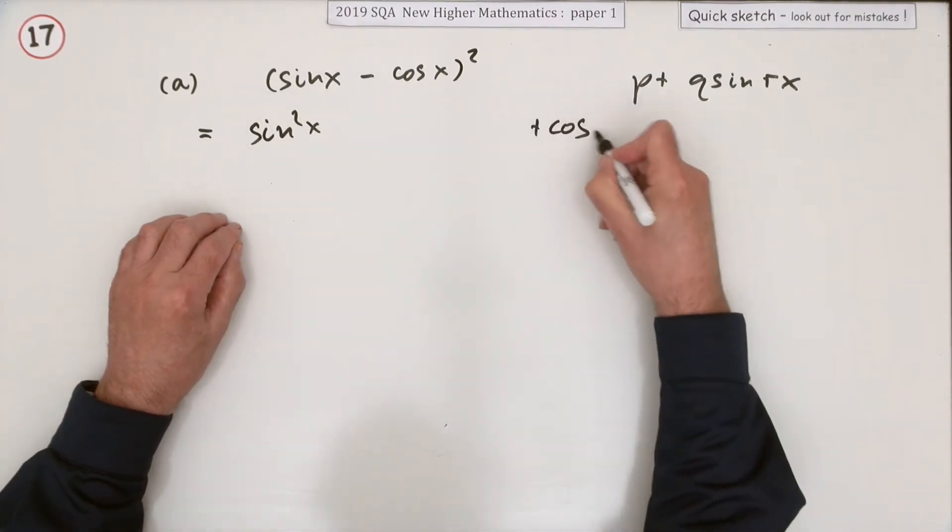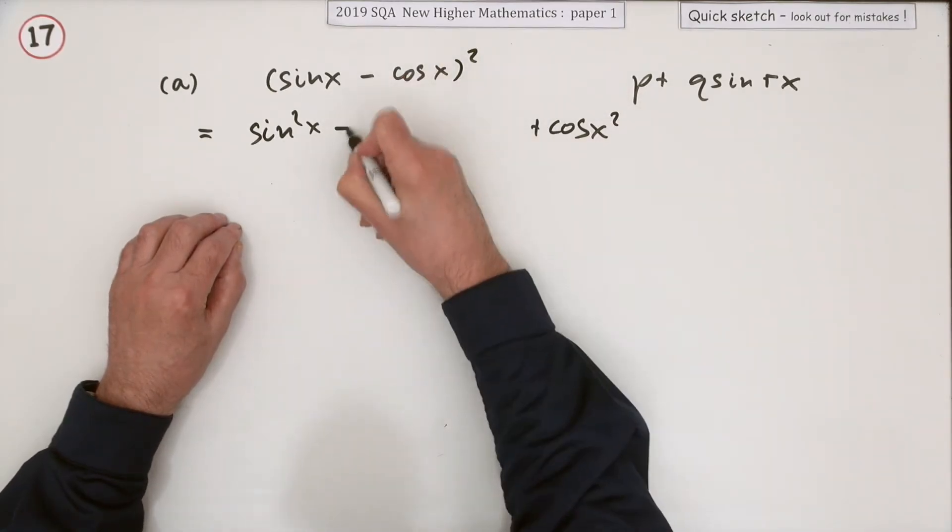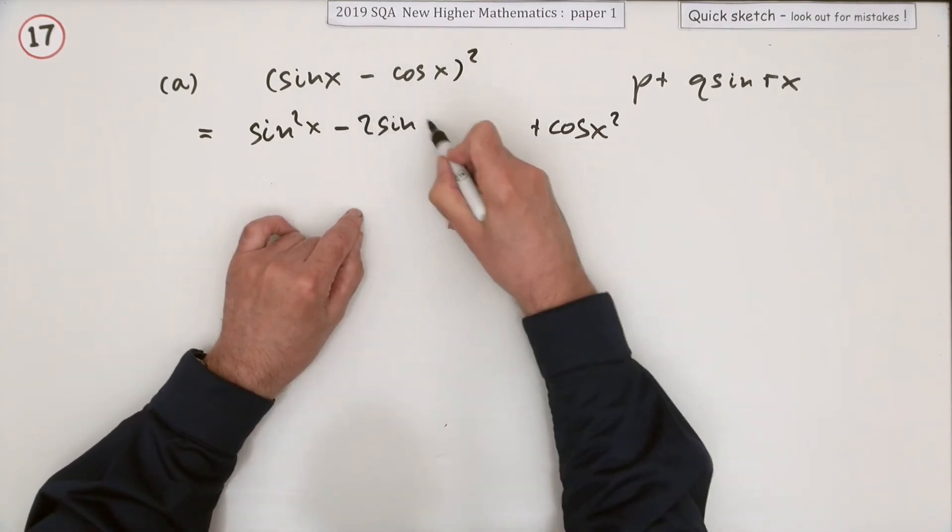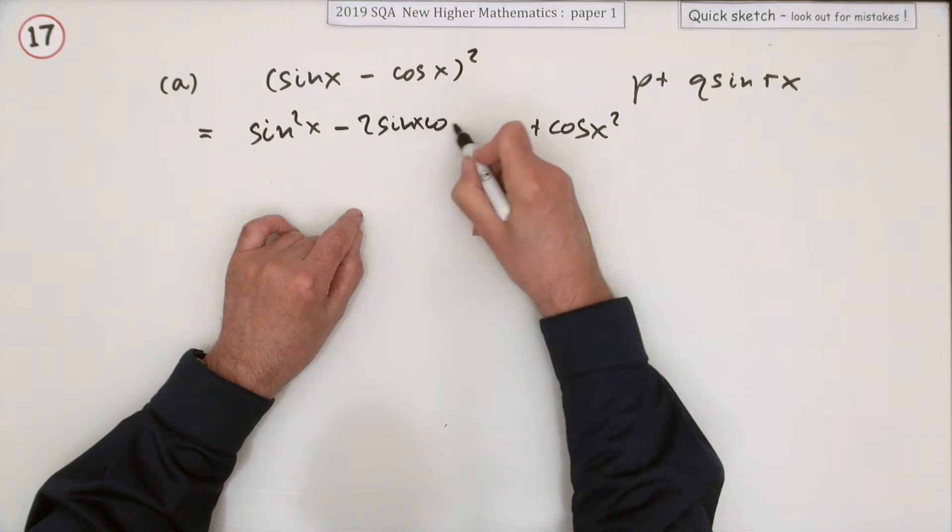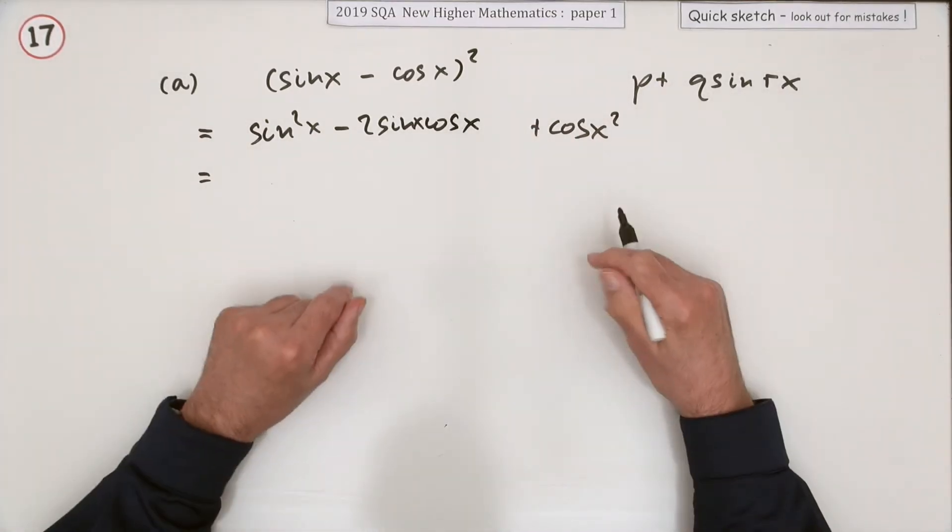Square the last - that'd be cosine squared - and in the middle that'll be minus twice the product, so two times sine x times cos x. And that's your answer immediately, but...